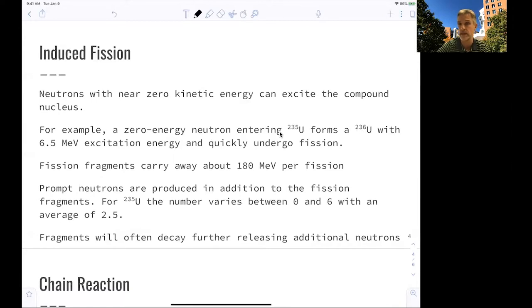The fission fragments then carry away some energy. In this example here, it's about 180 MeV and additional prompt neutrons. So those additional prompt neutrons, depending on the specific decay process, the number can be varying between 0 and 6. And for uranium 235, the average number is 2.5. And then the fragments, they might undergo additional decay processes, maybe beta decays, alpha decays, and when they do that, they can also release additional neutrons.